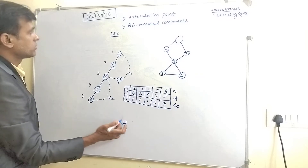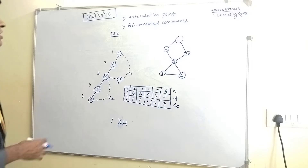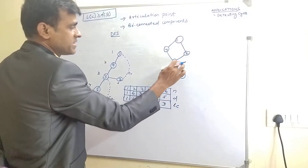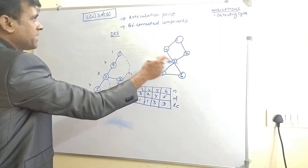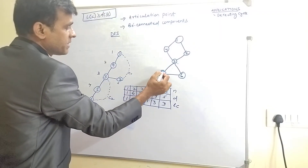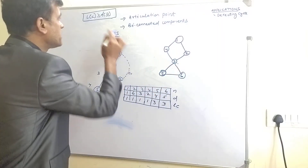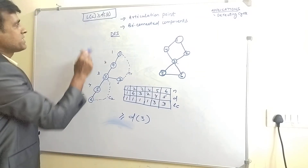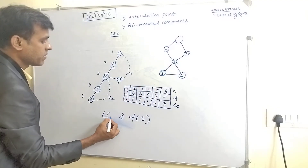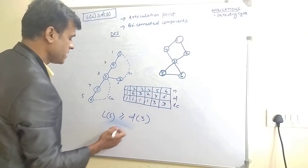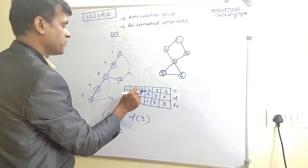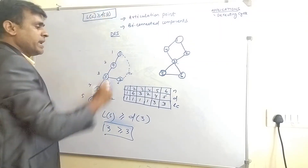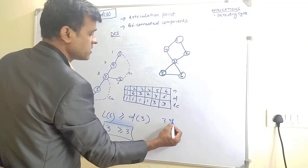The inequality is not satisfied for node 1, so it is not an articulation point. Now let us check node 3 as a parent. The discovery time of node 3 is 3. Its child is node 5, and the lowest time of node 5 is 3. Since lowest time of child (3) is greater than or equal to discovery time of parent (3), this condition is satisfied. Therefore, node 3 is the articulation point.